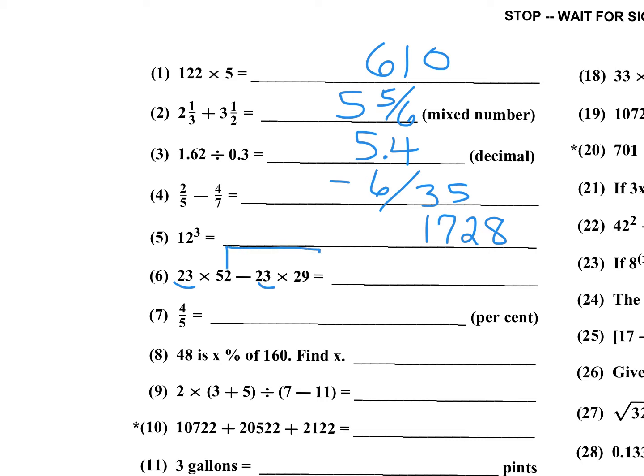Adding one to each gives 53 minus 30, which is 23. So I have 23 times 23, which is 23 squared — that's 529. You should memorize 23 squared.